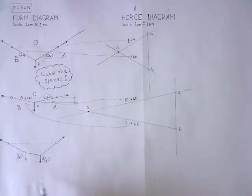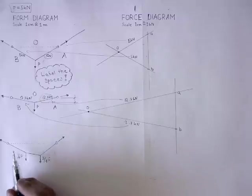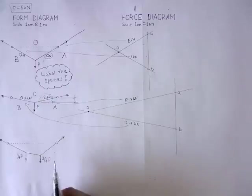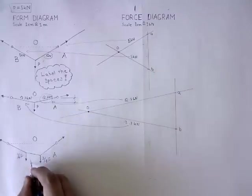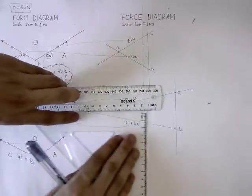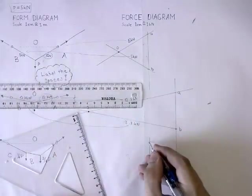Now let's go to a slightly more complex example. Here we have two forces. The first one is 1.25 kN. The second one is 3.75 kN. Label the spaces. Draw the load line. Mark point A.